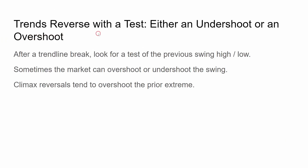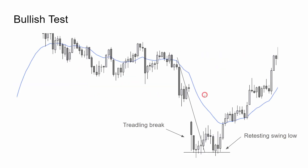Trends reverse with a test — either an undershoot or an overshoot. After a trend line break, look for a test of the previous swing high or low. Sometimes the market can overshoot or undershoot the swing. Climax reversals tend to overshoot the prior extreme.